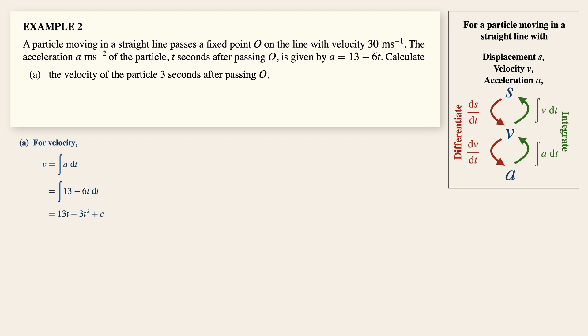Now to get the value of c, simply get the clues from the questions itself. So when t is equals to zero, the question says that v is equals to 30. Now substituting that into our velocity equation, c is 30. And now we have this velocity equation over here.